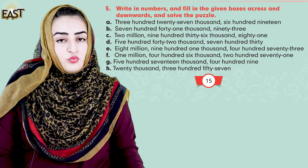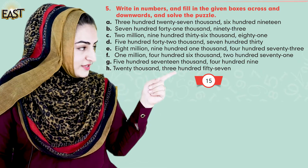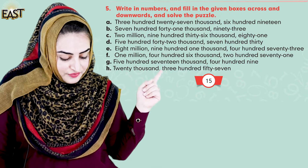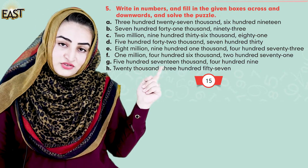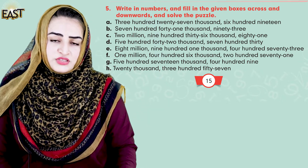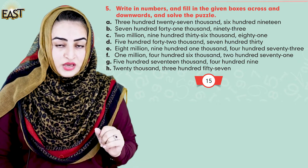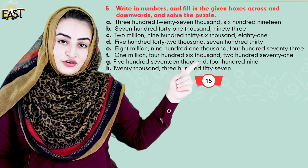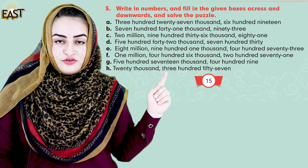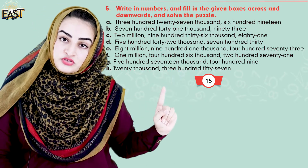Do you remember the page? It's page 15. What's the next question? Let's see. Write in numbers and fill in the given boxes across, downward, and solve the puzzle. Now you must be thinking, how can we do this? Because you see, these are written in words, and you have to write these words in numbers in the puzzle.